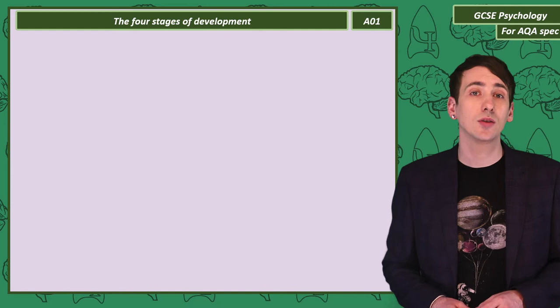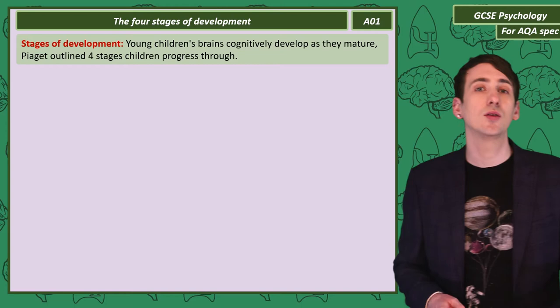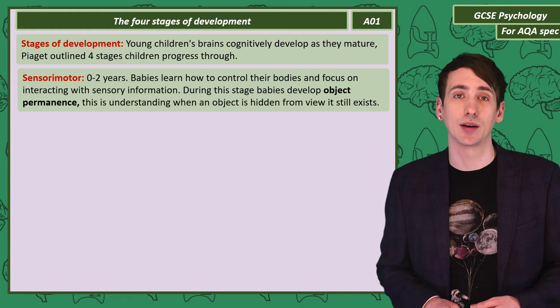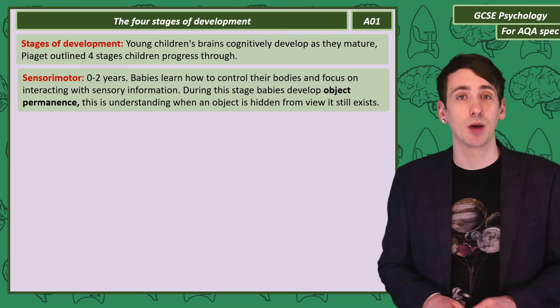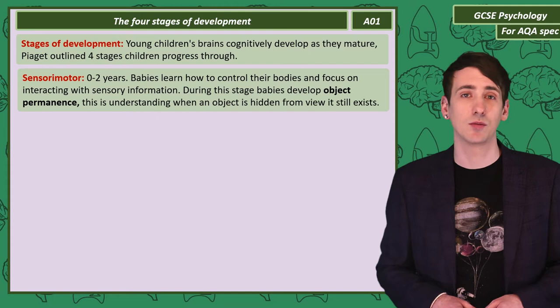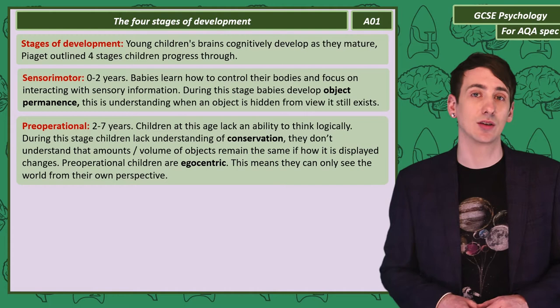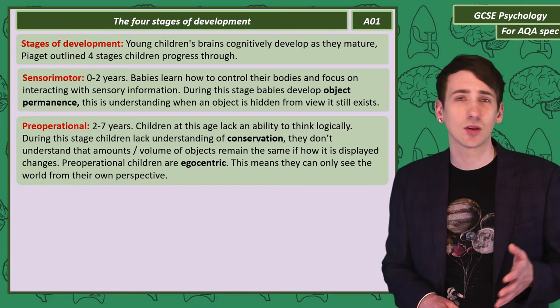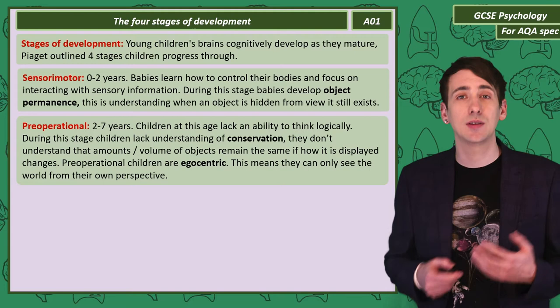Piaget broke down the cognitive development of children's brains into four distinct stages. Firstly, sensorimotor — between 0 and 2 years old. Babies are just first learning how to control their bodies, interacting with sensory information, and at this stage develop object permanence, meaning they start to understand that an object still exists even if it is hidden from view. The second stage is pre-operational, between 2 and 7 years old. Children lack the ability to think logically at this stage, they don't understand conservation — that the amount or volume of an object remains the same even if how it is displayed changes. They are also egocentric, meaning they only see the world from their own perspective.